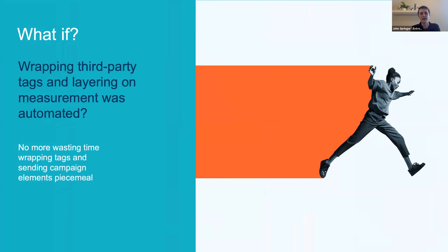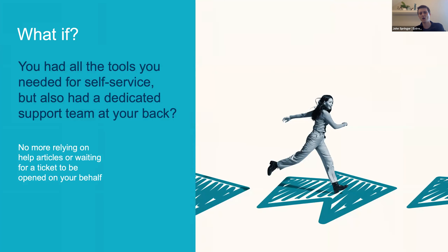And what if wrapping third-party tags and layering on measurement was streamlined and automated, meaning no more wasting a ton of time wrapping tags, no more sending campaign elements piecemeal — all of that stuff can be funneled through one system and automation can speed up this trafficking process tenfold. And what if you have all the tools that you needed for self-service, but you also had a dedicated support team at your back that understands video advertising never sleeps — it's always on — and matches that level of coverage and customer support, meaning no more relying on help articles or waiting for a ticket to be opened on your behalf, no more delays in times of need and in crunch time.